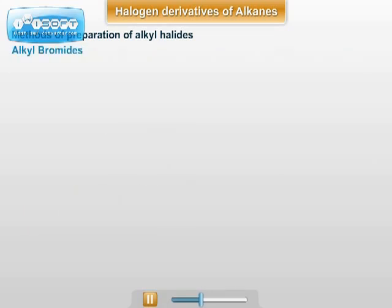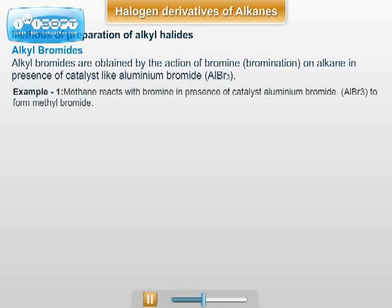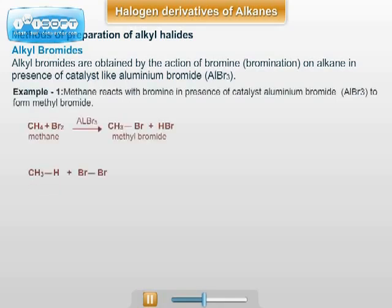Alkyl bromides are obtained by the action of bromine on alkanes in the presence of a catalyst like AlBr3, that is aluminum bromide. For example, methane reacts with bromine in the presence of AlBr3 as a catalyst, and methyl bromide is obtained.